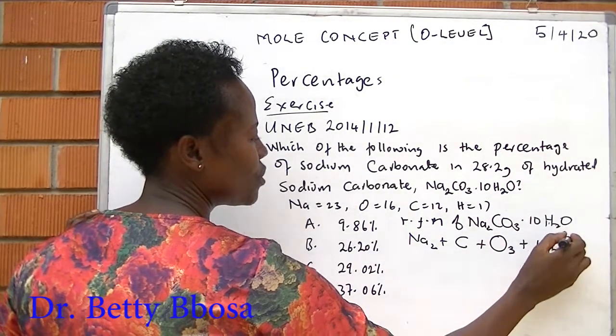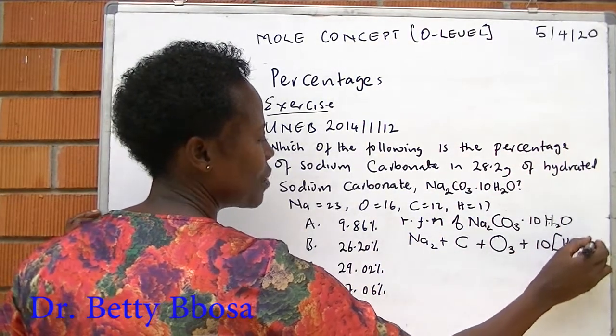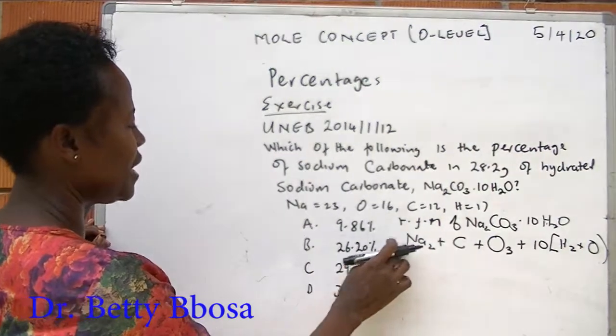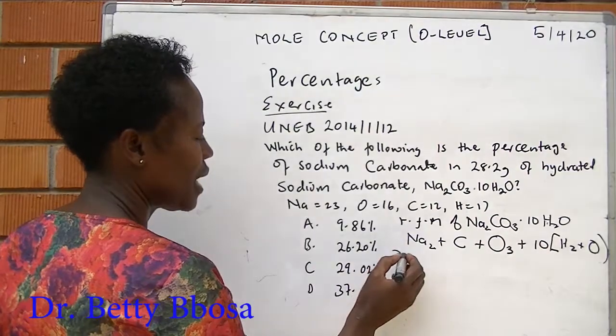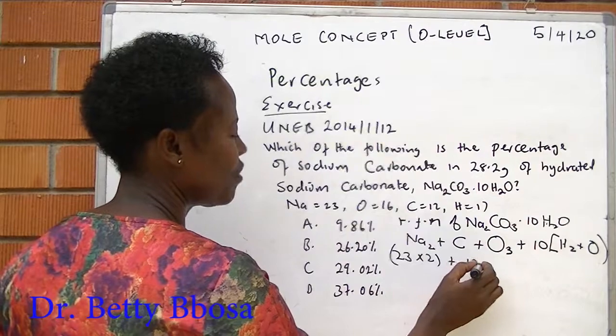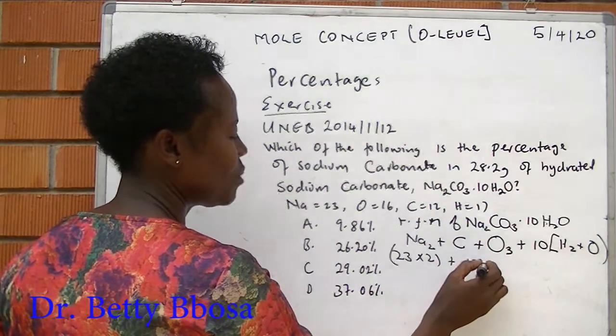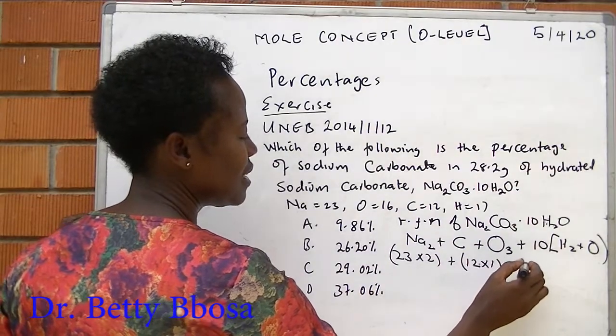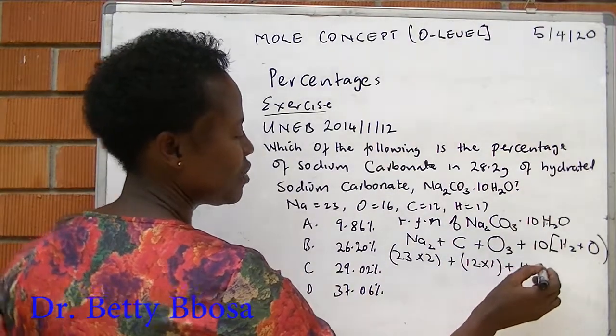Bracket 2 atoms of hydrogen plus oxygen. Sodium we are given is 23, but we have 2 atoms of sodium. Carbon is 12. How many carbon atoms? Only 1. Plus 16, how many atoms? 3.